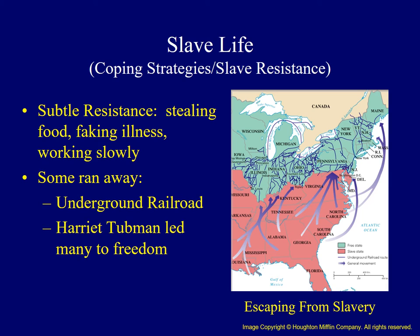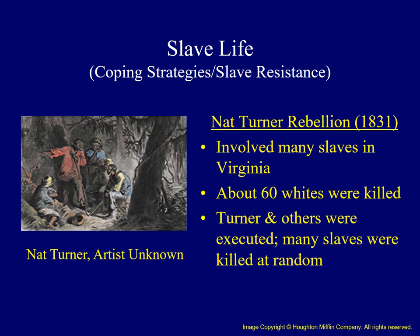Some slaves attempted to run away. Many different routes are included in what some called the Underground Railroad, an informal network of safe homes which provided a haven for slaves fleeing northward. Harriet Tubman was one former slave who led fugitives to freedom over the Underground Railroad. Others, like Nat Turner, conspired to stage a major rebellion. After several years of planning, in 1831, Turner along with other slaves raided the homes of several Virginia planters. As many as 60 whites of all ages were killed. The rebellion was soon put down, and whites retaliated by executing Turner and his associates, while killing many other slaves in the region at random.